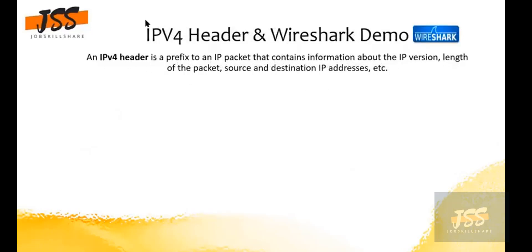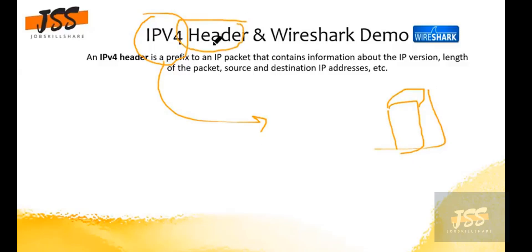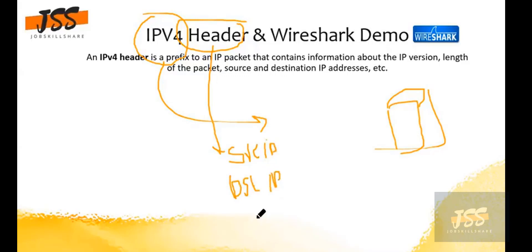Since we are talking about IPv4, we want to take a detailed look at what is inside the IPv4 header. An IPv4 header is a prefix to an IP packet that contains information about the IP version, length of the packet, and source and destination. This IPv4 header tells us where this IP is heading, what is the source IP, what is the destination IP, and what kind of protocol is going to be used.